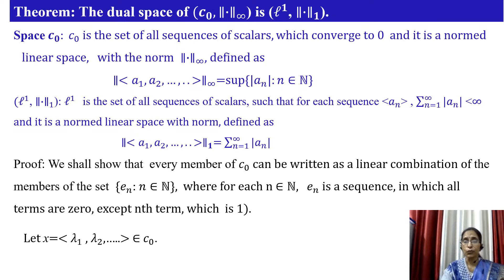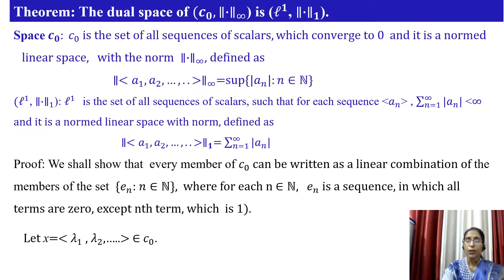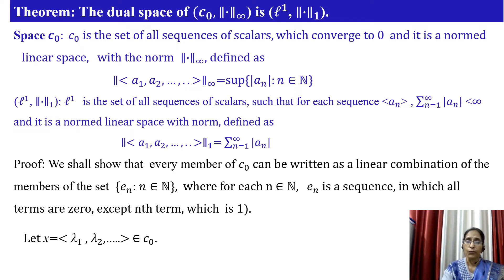We have proved that these two spaces are also Banach spaces. Let us prove this theorem. We shall show that every member of C₀ can be written as a linear combination of members of the set {eₙ}, where for each n in ℕ, eₙ is the sequence in which all terms are 0 except the nth term which is 1. We show that this set is a basis of C₀.